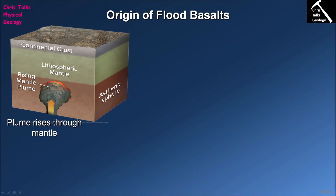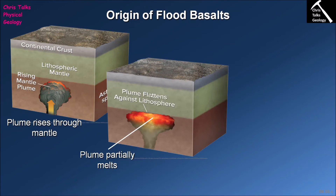In our model we have a piece of continental lithosphere — the continental crust with the lithospheric mantle attached to the bottom, which is solid. Below that is the asthenosphere. Here is our mantle plume, which has come up all the way from the core-mantle boundary. As it enters this region, pressure becomes low enough for it to begin to partially melt. When the plume hits the base of the lithosphere it spreads out laterally, producing a distinctive mushroom-like shape along the base of the lithospheric mantle, and we start forming mafic magmas right there.